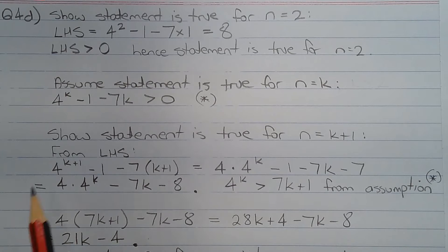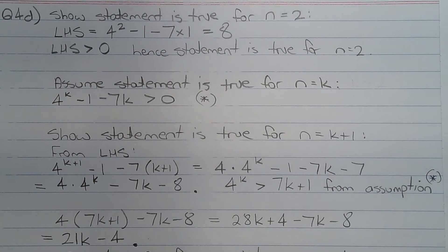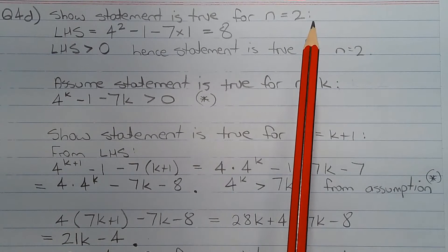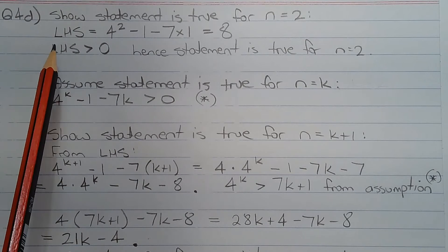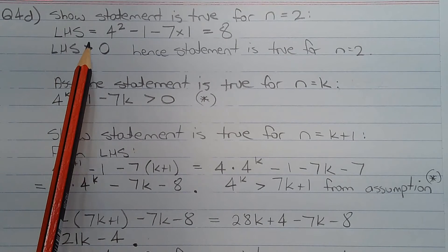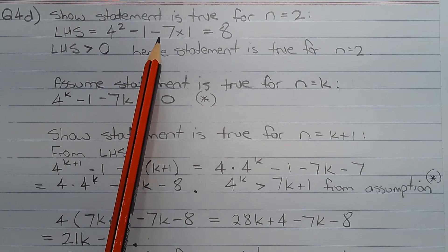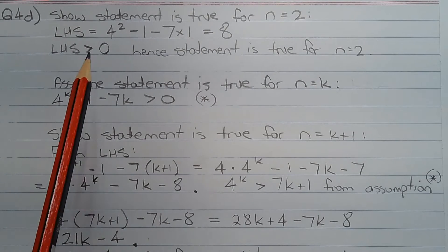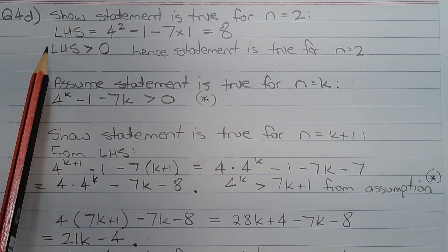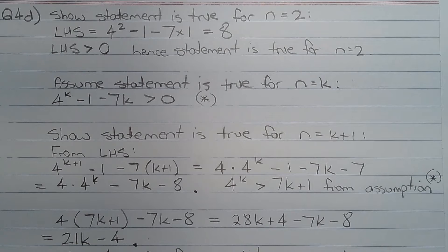The first step is to show the statement is true for some value of n, and in this case the smallest value we can test is n equals 2. From the left hand side we have 4 squared minus 1 minus 7 times 1, which equals 8. The left hand side is greater than 0, hence the statement is true for n equals 2.